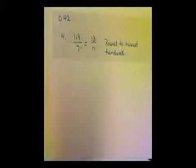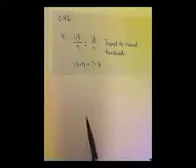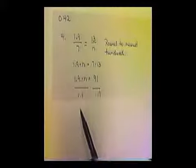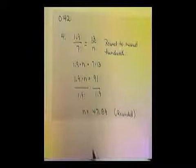Our next example says round to the nearest hundredth. We want to find the value of n if 1.9 over 7 is equal to 13 over n. So we're going to set the cross products equal to each other: 1.9 times n should equal 7 times 13. We get 1.9 times n is equal to 91, because 7 times 13 equals 91. Now we divide both sides by 1.9, and we get 47.89 rounded to the nearest hundredth.